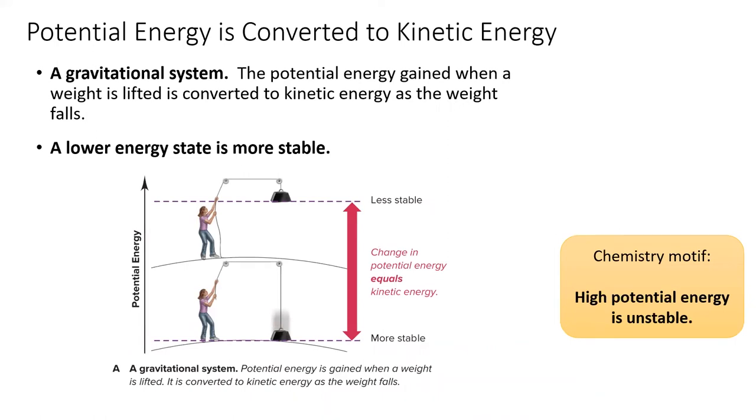I'm sure you're familiar with gravitational systems. In this example, a woman holds a heavy block high above the ground. In this position, it has a high potential energy. You wouldn't want to walk underneath the weight. This system demonstrates a central motif of chemistry. Things high in potential energy are unstable and things low in potential energy are more stable.